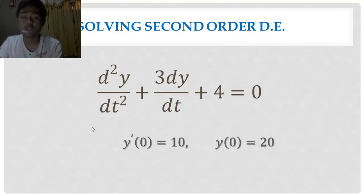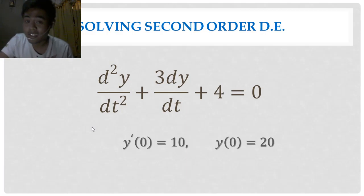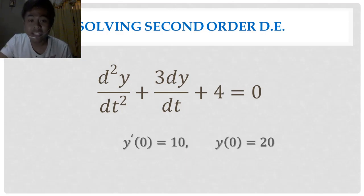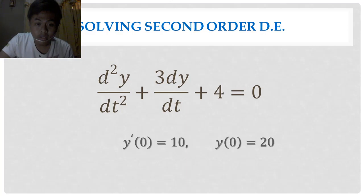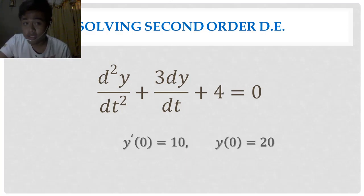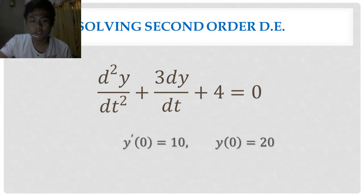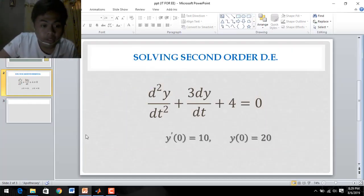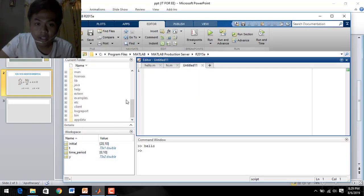Our equation for solving a second-order differential equation is: d squared y over dt squared, plus 3 dy over dt, plus 4, is equal to 0. Our initial conditions are: y prime of 0 is equal to 10, and y of 0 is equal to 20.